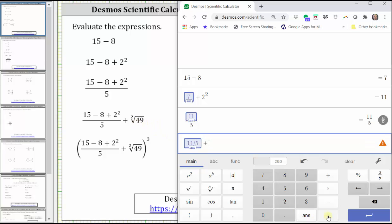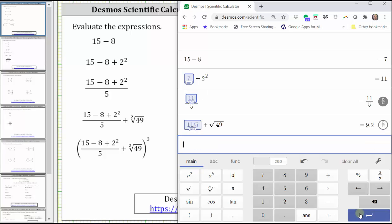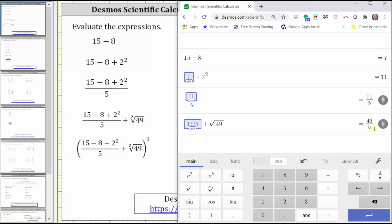So we have plus, the square root key is this key here, below the a squared. Then we enter the radicand of 49 and enter, which gives us 9.2 as a decimal, or as a fraction, we have 46 fifths.